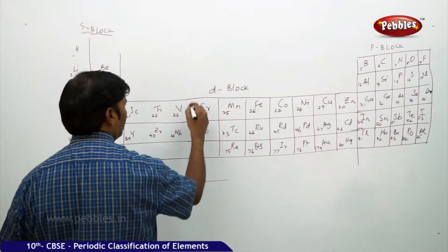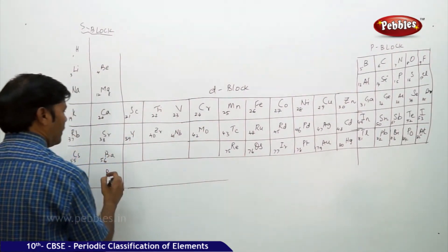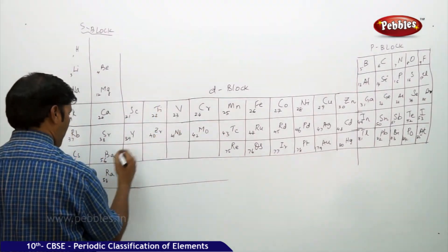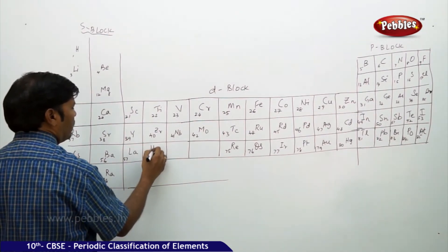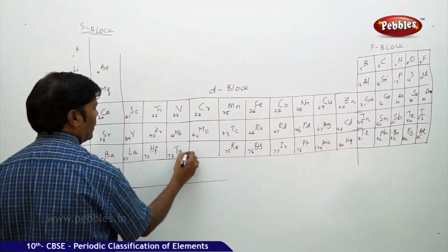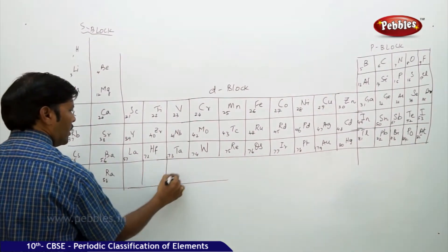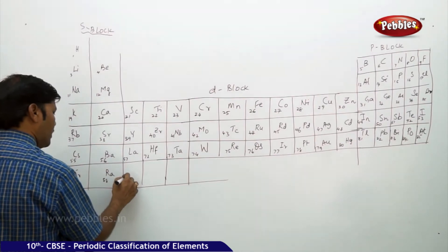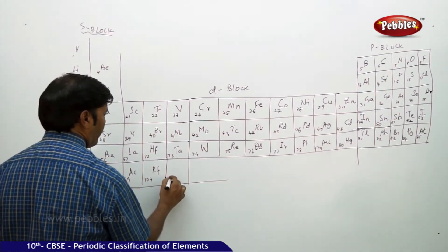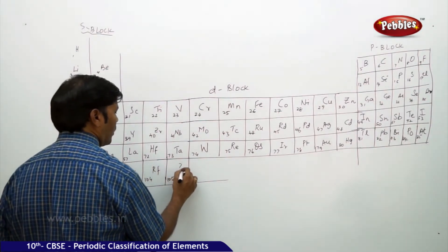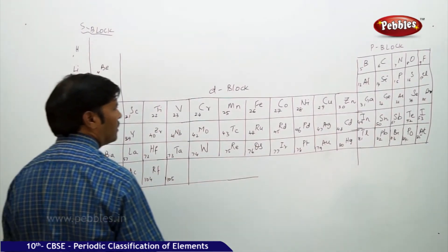43 technetium, 44 ruthenium, 45 rhodium, 46 palladium, 47 silver, 48 cadmium. Here zinc cadmium mercury. Copper silver gold, nickel palladium platinum 78, then cobalt rhodium 77 is iridium. Iron ruthenium osmium 76, 75 is rhenium.